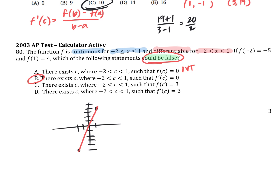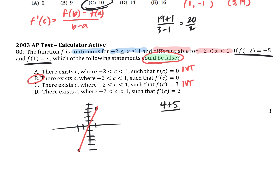Answer C says: if f of c — that's just fancy for y — would my y have to be 3 at some point? Yes. What theorem? Intermediate value theorem. That one has to be true — my y would have to be 3 at some point, no matter what my function looks like. What about D — my slope would have to be 3? How would I find my average slope? 4 plus 5 over 1 plus 2 — that gives me 9 over 3, which is 3. Because it was continuous and differentiable, the average slope is 3, and there would be at least some other point with that same slope of 3 — that's the mean value theorem. So answer B — whether the slope has to be 0 — could be false.